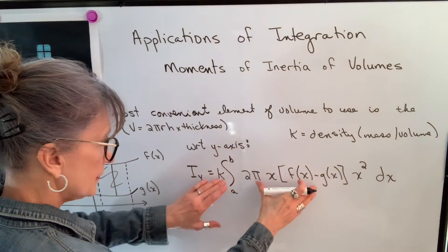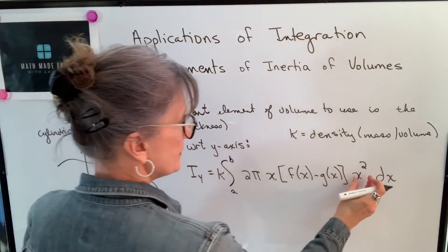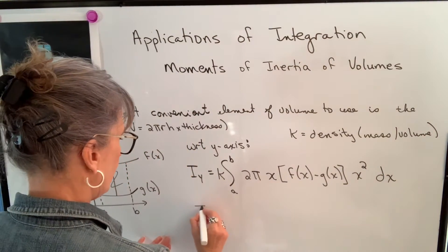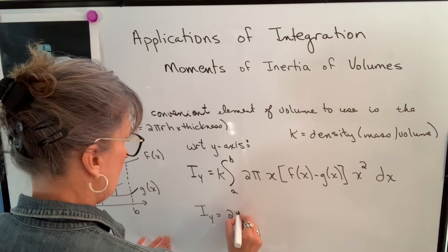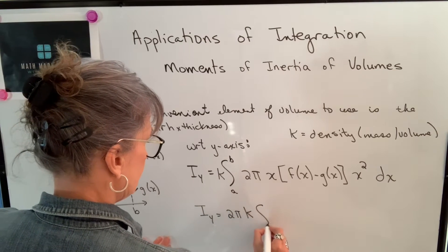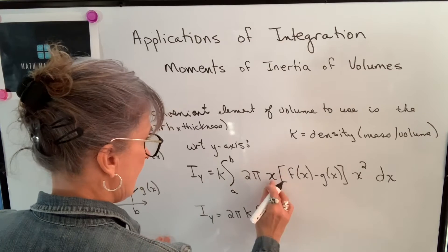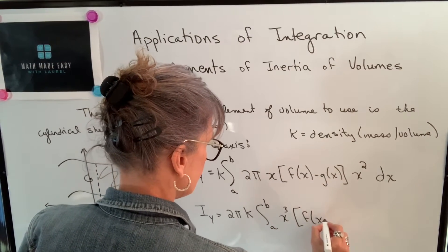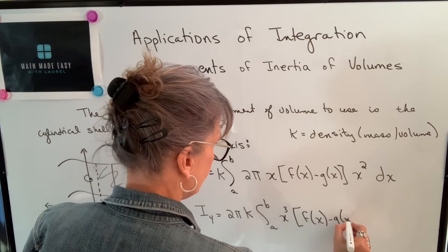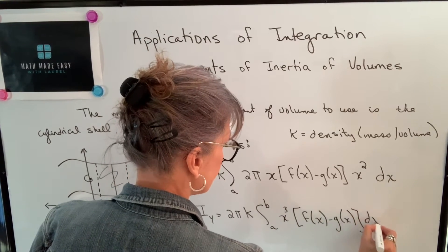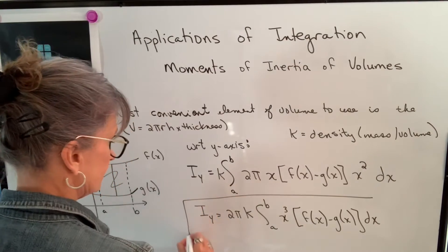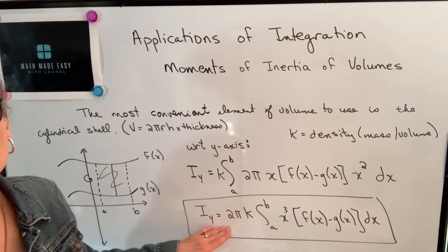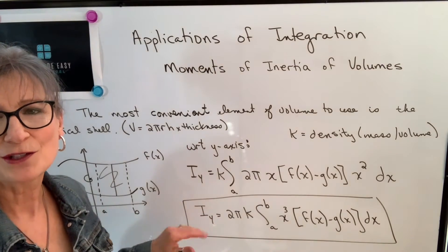So this gives me the mass, and this is multiplied by the distance squared. Bringing all constants out front, that would be 2 pi k times the integral from a to b of x cubed times f of x minus g of x, dx. So that's the formula we're going to use to find the moment of inertia of a solid with respect to the y-axis.